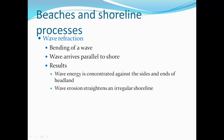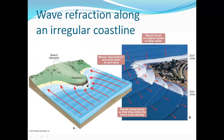Wave refraction is the bending of a wave such that it arrives parallel to the shore. The result is that wave energy is concentrated against the sides and ends of a headland. Wave erosion straightens an irregular shoreline. As waves approach land they bend to hit the beach parallel, forcing a lot of energy directly at both sides of the headland to erode it. Eventually this material is eroded and deposited on either side, leaving a straight shore.